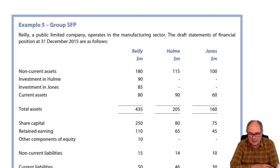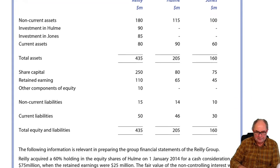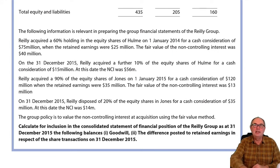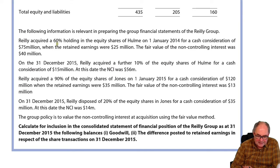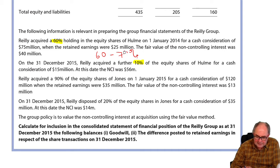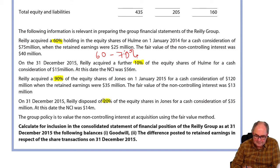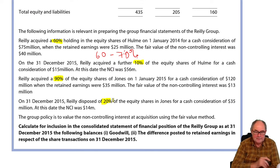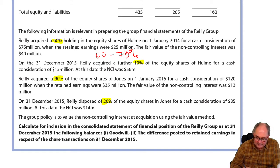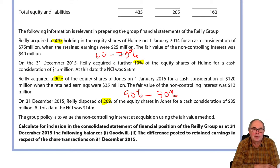In this scenario, there are three group companies: Riley, Hume and Jones. We notice that there were some changes in group during the year. In respect of Hume, they went from 60 up to 70%. In respect of the other one, Jones, they went down from 90 down by 20 to 70%. So the control threshold is not crossed in either case.